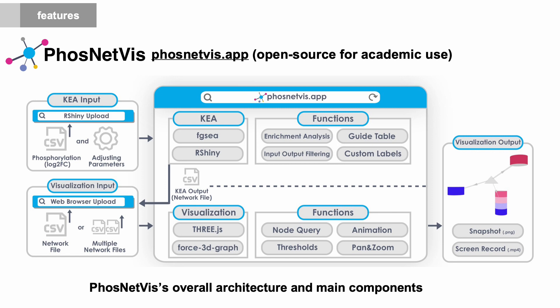And network visualization is through a web browser where the user can perform node queries, animations, thresholding, and pan and zoom. The visualization output shows the kinase, for example, here in a triangle, and the target proteins can have one or more phosphosites that is visualized directly, and the user can take snapshots, screen recordings, or animations of the visualizations.